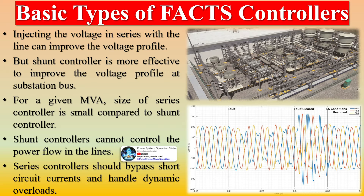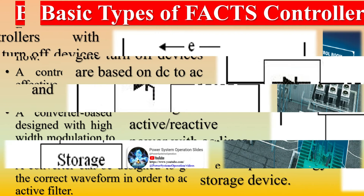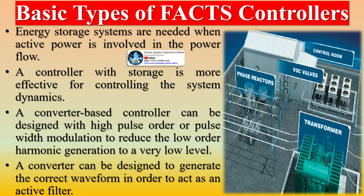Shunt controllers cannot control the power flow in the lines. Series controllers should bypass short-circuit currents and handle dynamic overloads. Controllers with gate turn-off devices are based on DC to AC converters and exchange active and reactive power with AC lines, requiring an energy storage device. Energy storage systems are needed when active power is involved; a controller with storage is more effective for controlling system dynamics. A converter-based controller can be designed with high pulse order or pulse width modulation to reduce low-order harmonic generation to a very low level. A converter can also be designed to generate the correct waveform to act as an active filter.